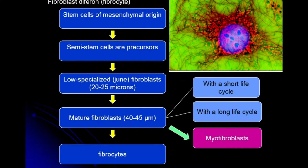Why do we call them myofibroblasts? Because they have the ability for contraction — like muscle cells. This is due to the presence of actin and myosin filaments in the cytoplasm. Myofibroblasts are found in places where injury of connective tissue has occurred, or in places of damaged muscle tissue — for example, as a replacement of damaged muscle tissue. They can also be found in the pregnant uterus.